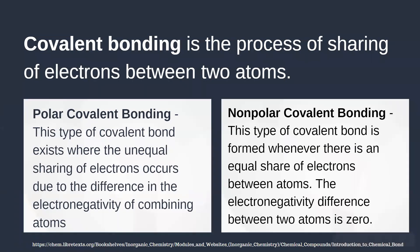There are two types of covalent bonding. First is the polar covalent bond. This is the type of covalent bond where unequal sharing of electrons occurs due to the difference in the electronegativity of the combining atoms. More electronegative atoms will have a stronger pull of electrons. The electronegativity difference between the atoms is greater than 0 and less than 2. As a result, the shared pair of electrons will be closer to the more electronegative atom.